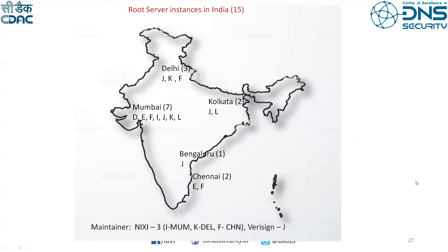In India, the distribution of root server copies includes: E and F root servers in Chennai, J root in Bangalore and Kolkata, and in Mumbai, D, E, F, I, J, and K root servers. NIXI is maintaining three root server instances in India, Verisign maintains J root, and ISOC maintains one in Kolkata.